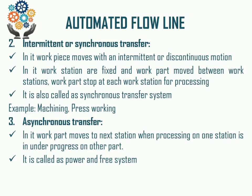The major disadvantage of intermittent or synchronous transfer is the blocking of the Automated Flow Line for a particular period of time. In this type, work stations are fixed and the work part moves between them. The work part stops at each work station for processing. It is also called synchronous transfer. The best example is machining and pressing operations.